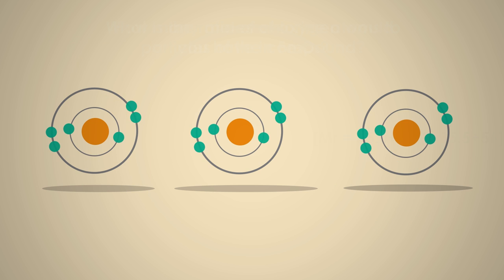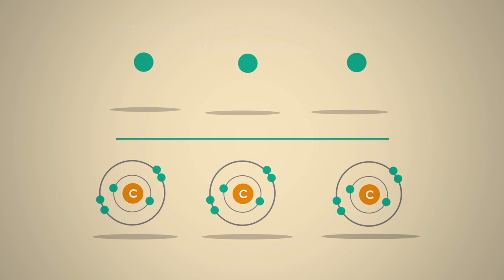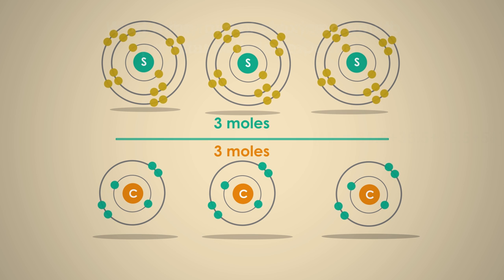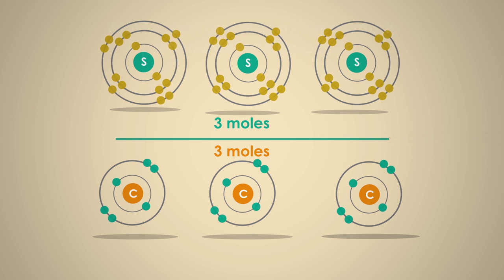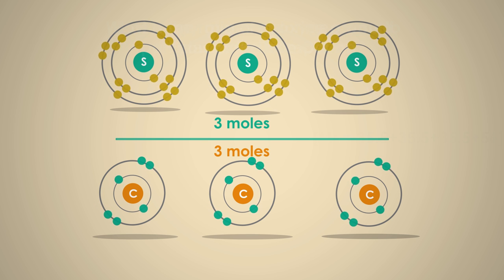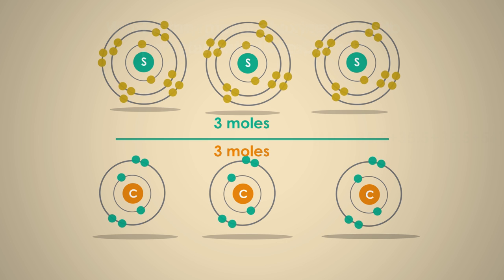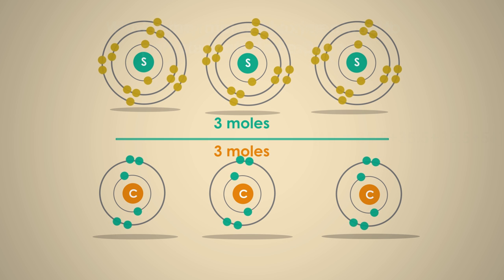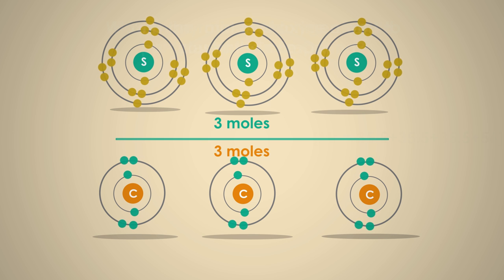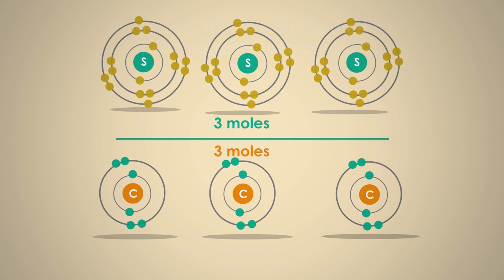When we compare chemicals, we compare equal numbers of particles even though the weights are different. If we have compounds instead of atoms, it doesn't matter how many atoms are in the formula, only the number of compound particles.